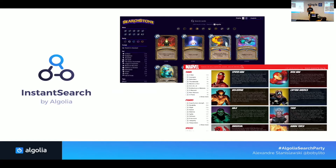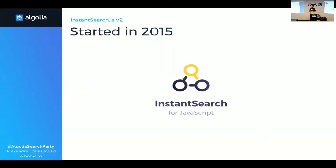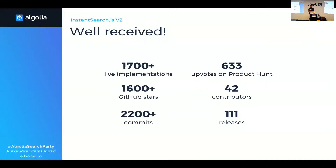It all started in 2015. In November 2015, we released InstantSearch.js v1. We were pretty happy about how well it was received — we now have more than 1,700 live implementations, a lot of upvotes on Product Hunt, 1,600 GitHub stars, 111 releases, and 42 contributors.